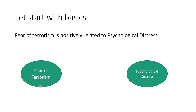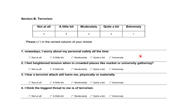Fear of terrorism is one variable that is an IV, and psychological distress is another variable that is the DV. This is the simplest relationship that we can hypothesize. So where does data from fear of terrorism and psychological distress come from? Obviously, I conducted a survey using some kind of questionnaire.